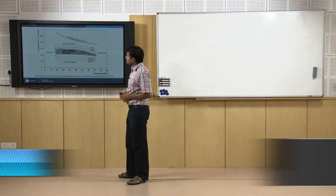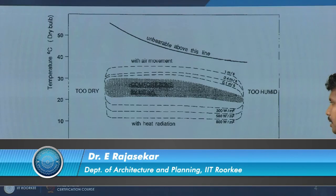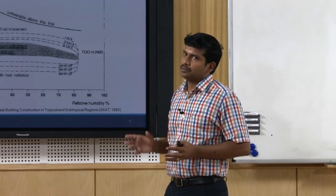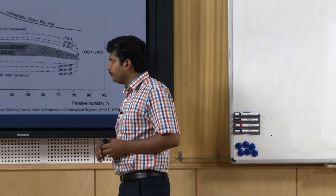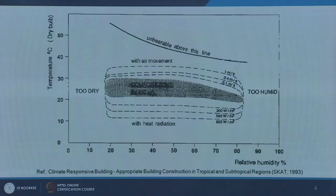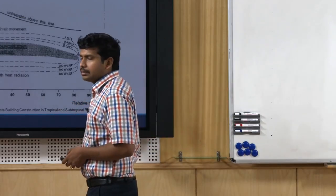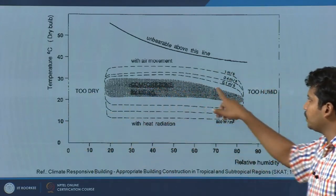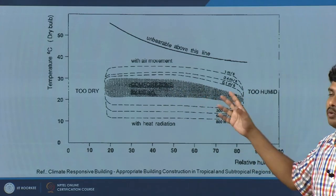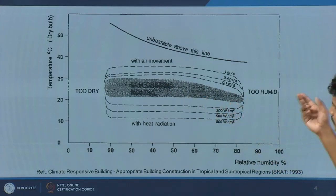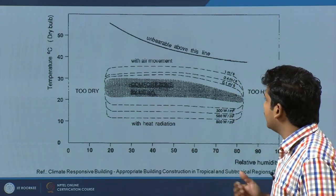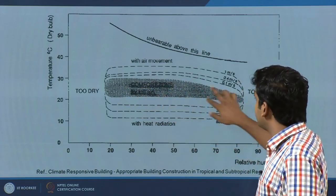The first topic is the bioclimatic chart itself. It is a very interesting chart. We talked a lot about comfort zones for regular thermal comfort in the psychrometric chart, plus the adaptive comfort zone. This bioclimatic chart has relative humidity on the x-axis, dry bulb temperature on the y-axis, and a comfort zone. This zone varies from location to location — originally it was developed in the US.